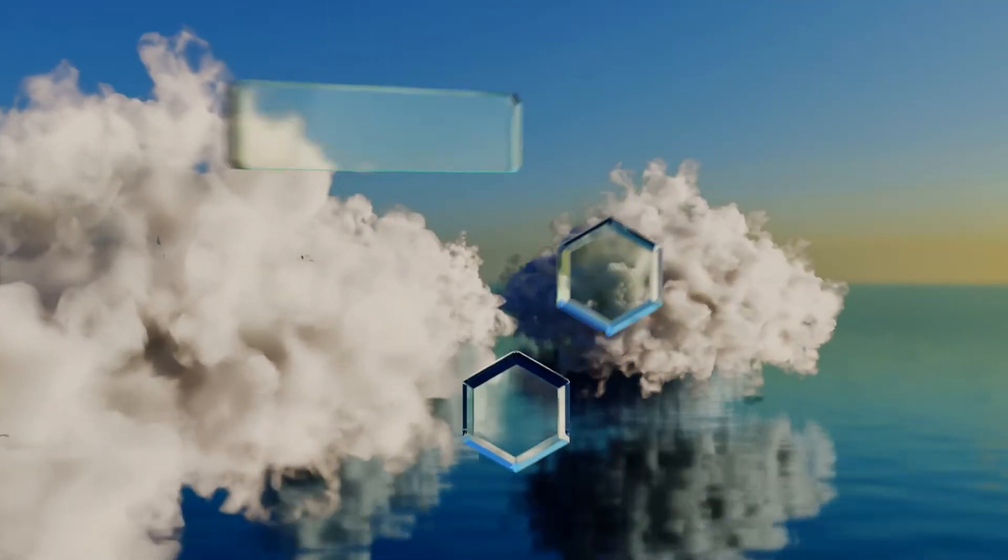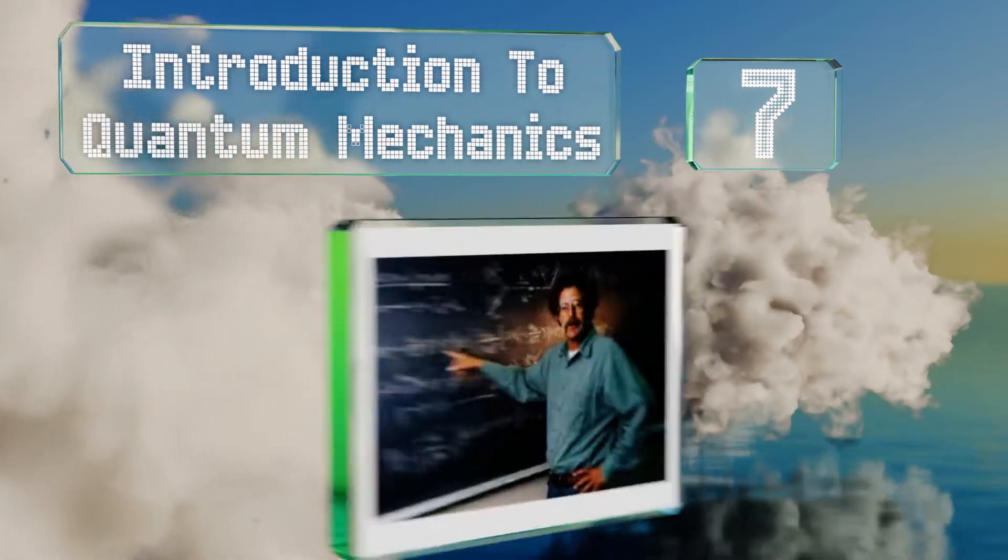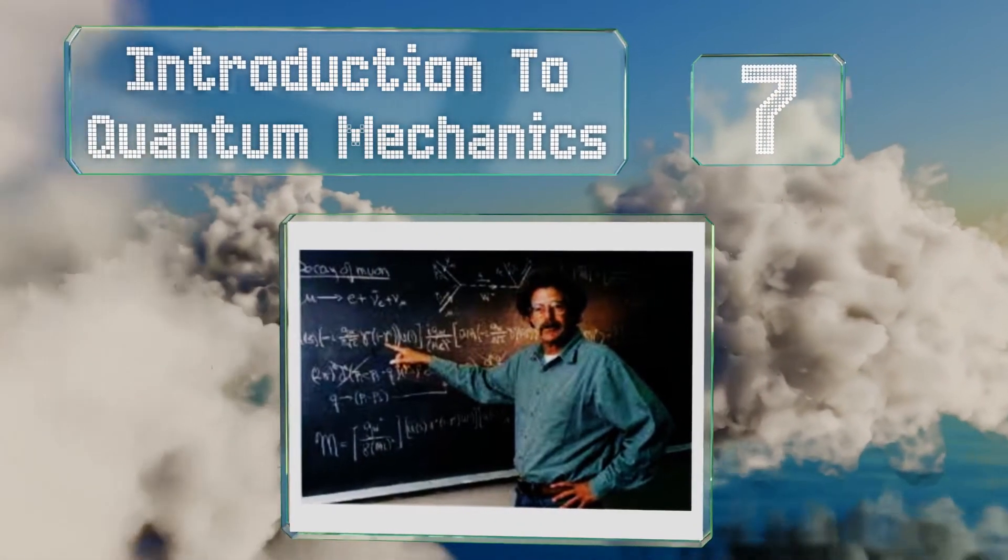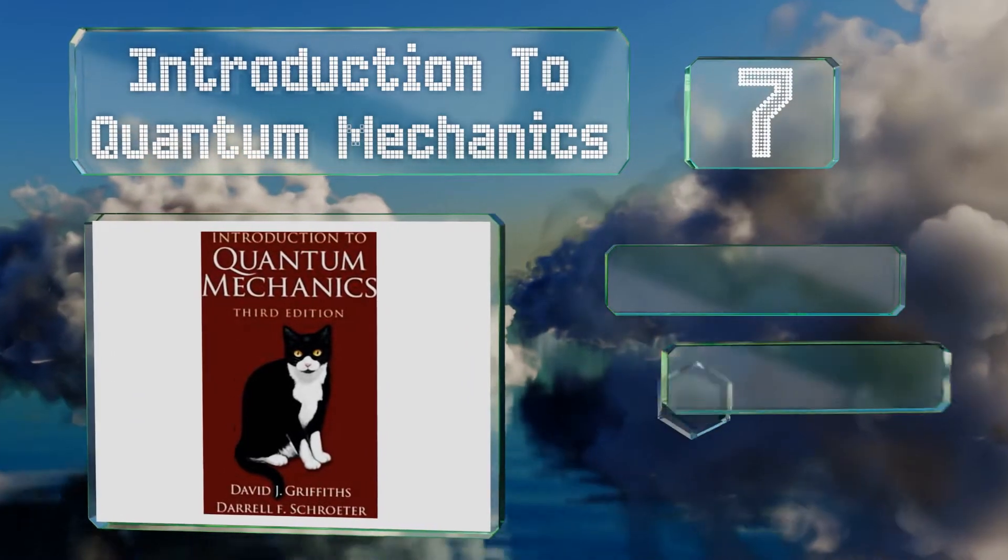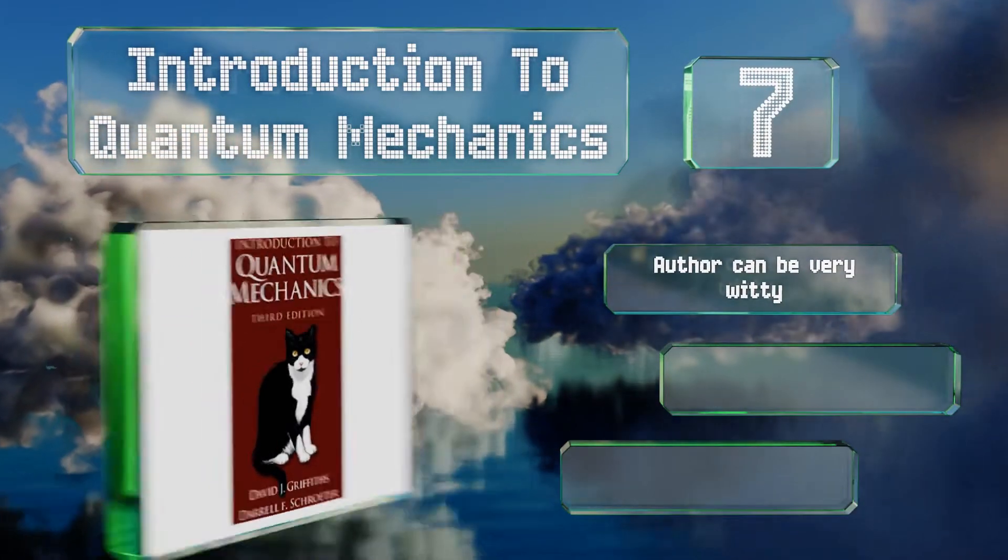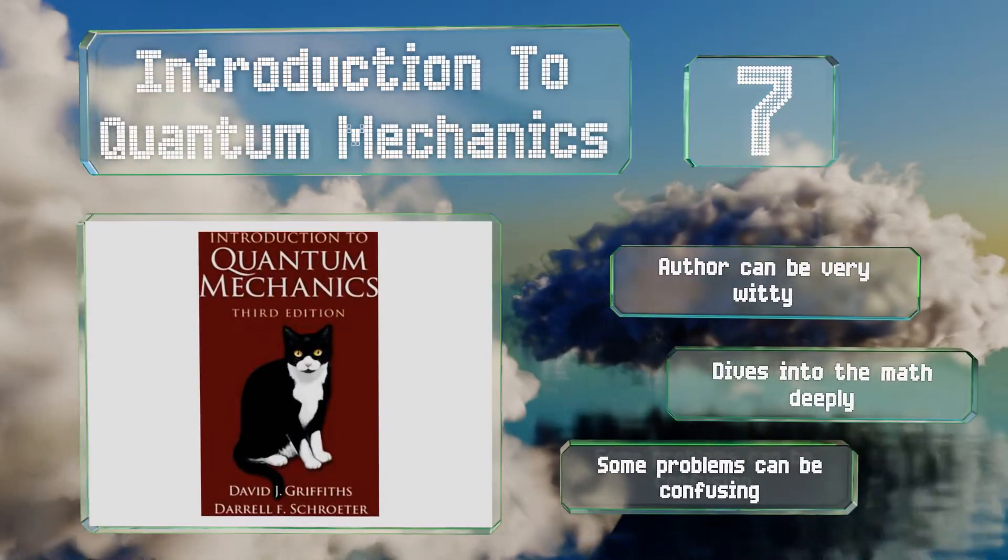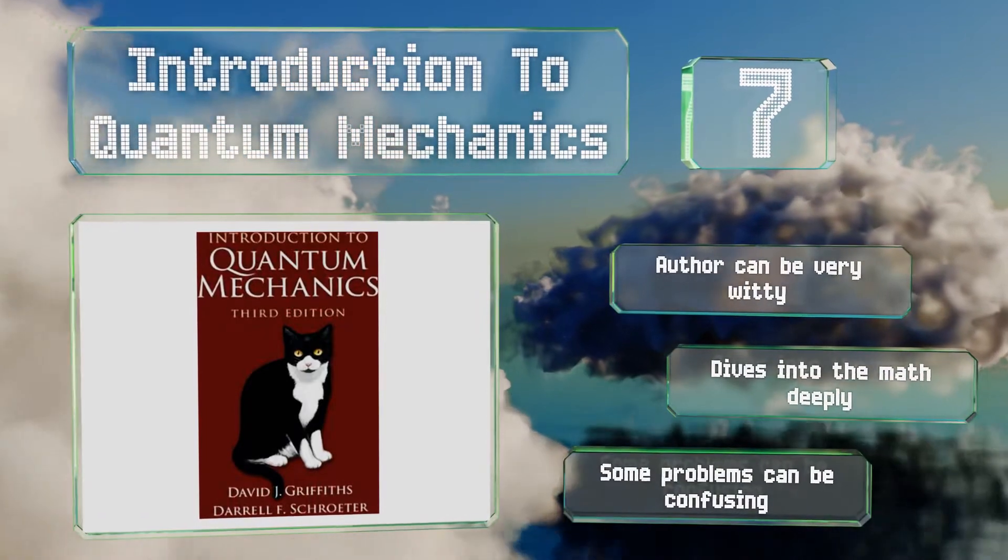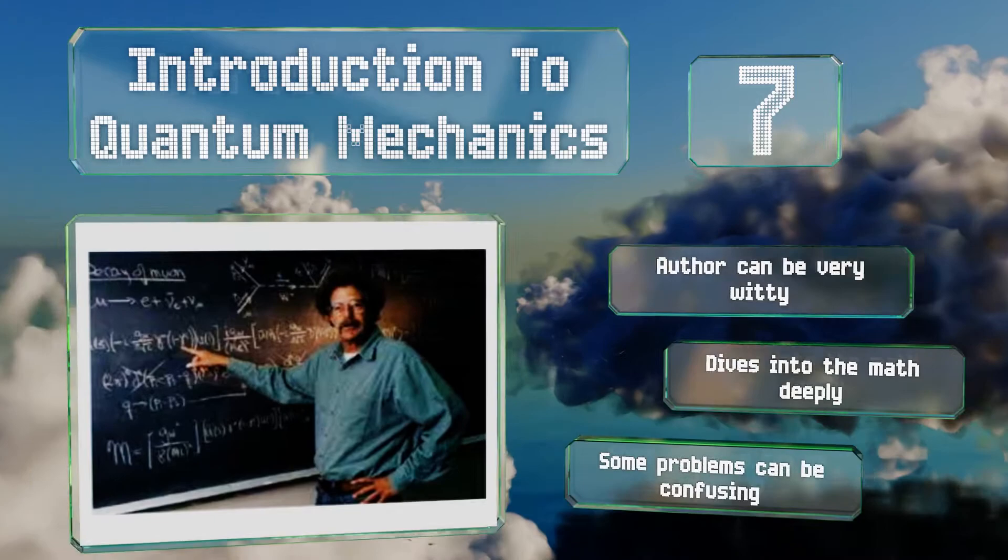At number 7, David J. Griffiths' Introduction to Quantum Mechanics tackles an intimidating subject by breaking the material into two distinct sections. The first is all about giving students the chance to perform its calculations, with the next focused on their meaning. The author can be very witty and it dives into the math deeply. But some of the problems can be confusing.